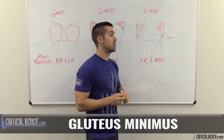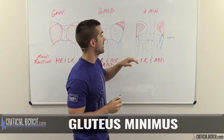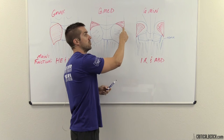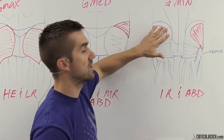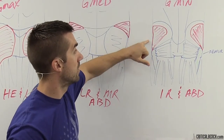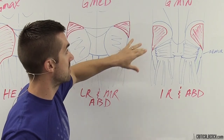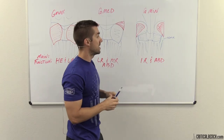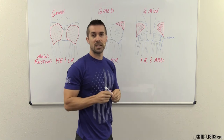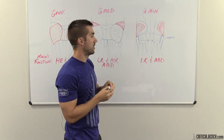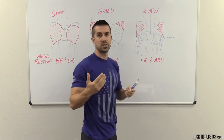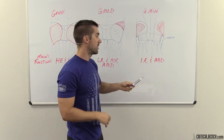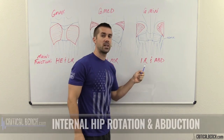Last but definitely not least is your G min — your gluteus minimus. In red, as you can see here, I've stripped away the glute max and the glute medius, and this is what's underneath. It's still in a fan shape and is the smallest of the three. It's kind of the neglected stepchild of the group — more of a supportive role, not necessarily a primary mover. However, it does internally rotate the hip.